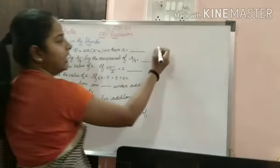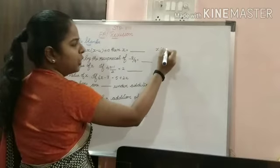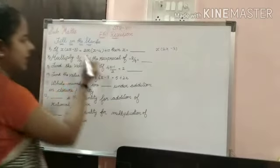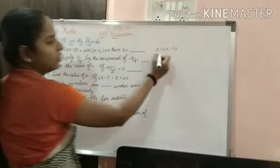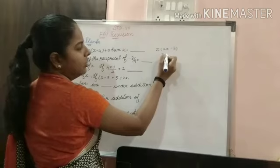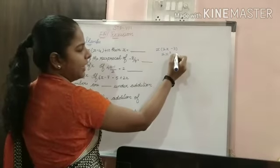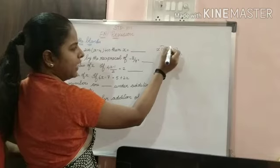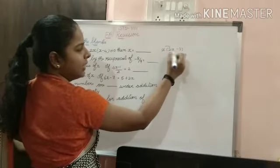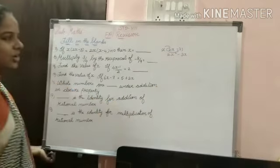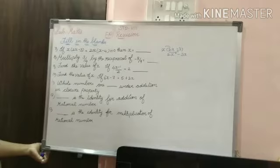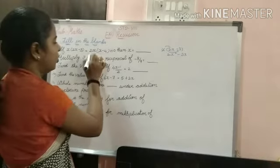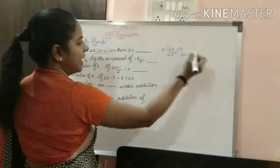So what is happening: x into 2x minus 3. First I am multiplying the left hand side. So what is happening: 2x squared minus 3x — this x is multiplied here and the x is multiplied here also. So the equation on the left hand side is 2x squared minus 3x.